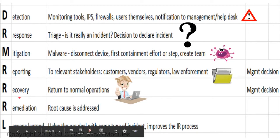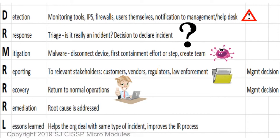For example, if malware was introduced into the network due to the allowance of rogue devices, rogue devices would be disabled on the network.